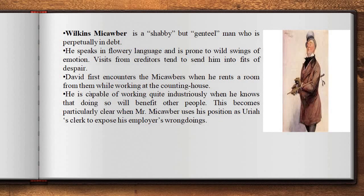Turning to the softer part of the novel — the character of Wilkins Micawber. Wilkins Micawber is a shabby but genteel man who is perpetually in debt. He speaks in flowery language and is prone to wild swings of emotion. Visits from creditors tend to send him into fits of despair. David first encounters the Micawbers when he rents a room from them while working at the counting house. He is capable of working quite industriously when doing so will benefit other people, as becomes clear when Mr. Micawber uses his position as Uriah's clerk to expose his employer's wrongdoings.